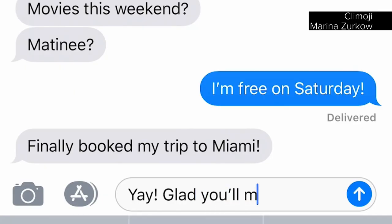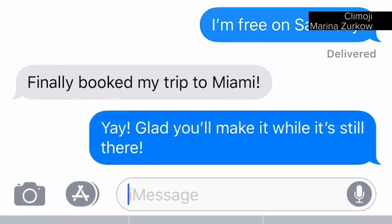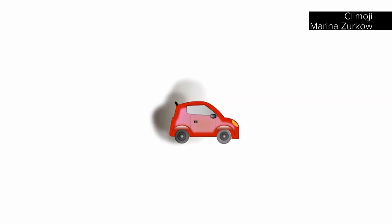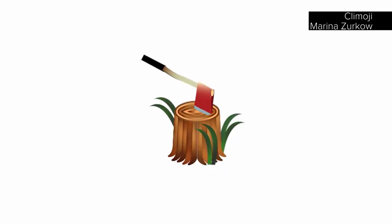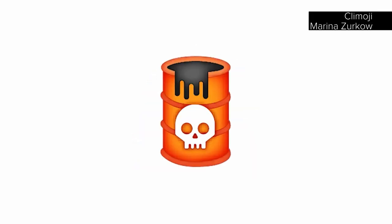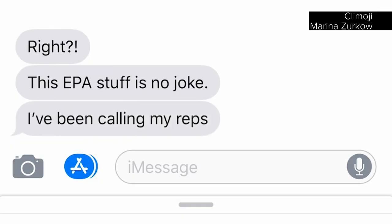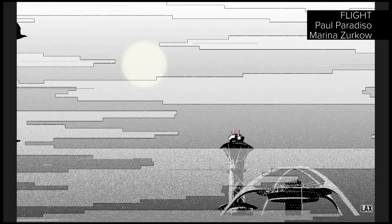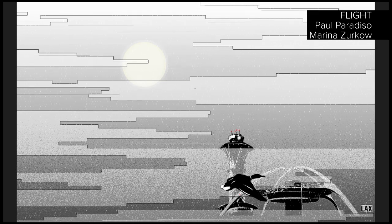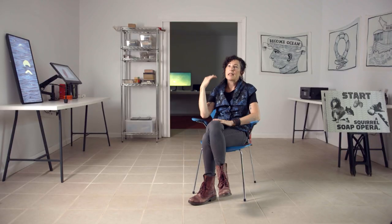The Climoji project is a set of emoji about climate change. There are 17 in the first set. Each of them addresses a cause or a symptom of climate change. It is such an important topic of conversation. It's as important as emotional states. I do believe that if you have visual culture around climate change, it begins to enter the psyche differently than if it's just a bunch of news reports and science reports on the side.